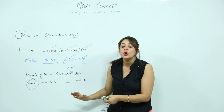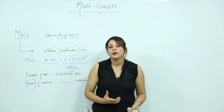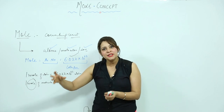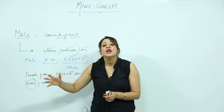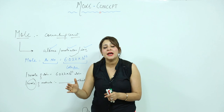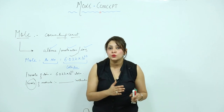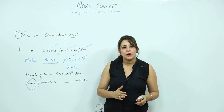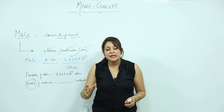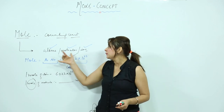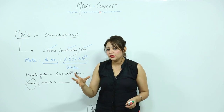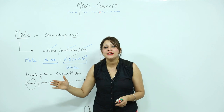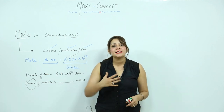If somebody asks for the technical definition of mole, you answer: mole is that quantity which contains the same number of entities — which can be atoms, molecules, or ions — as the number of atoms present in 12 grams of C-12, that is the carbon-12 isotope. So mole is a quantity which contains the same number of entities as present in 12 grams of the C-12 isotope of carbon.